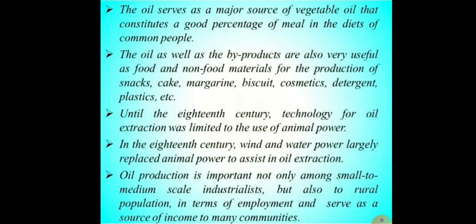The oil serves as a major source of vegetable oil, constituting a good percentage of the meal in the diet of common people. The oil as well as the byproducts are also very useful as food and non-food material for the production of snacks, cakes, margarine, biscuits, cosmetics, detergents, plastics, etc. Until the 18th century, technology for oil extraction was limited to the use of animal power — a basic example being the Ghani, which was animal-oriented. In the 19th century, wind and water power largely replaced animal power. Oil production is important not only among small to medium scale industrialists but also to the rural population in terms of employment and as a source of income to many communities.